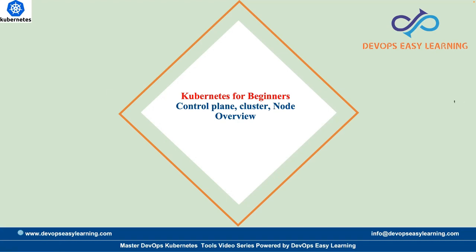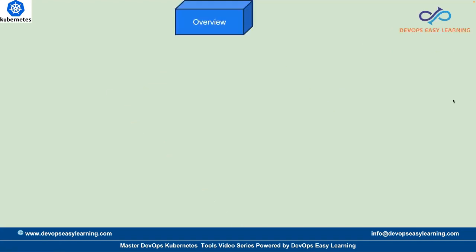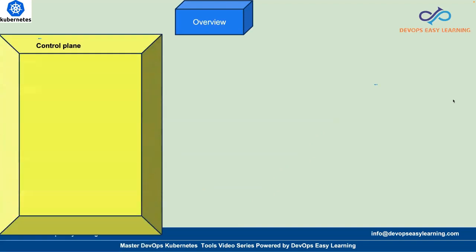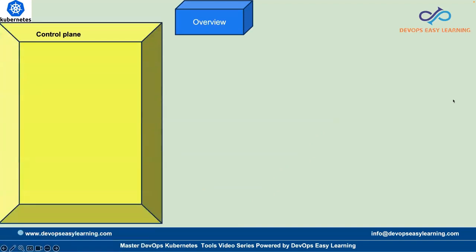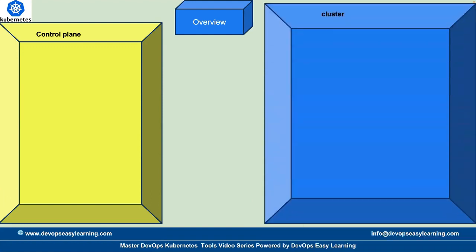In the Kubernetes architecture, we have a control plane, which is actually the brain that controls everything. The control plane controls the cluster, so we have the cluster under it.